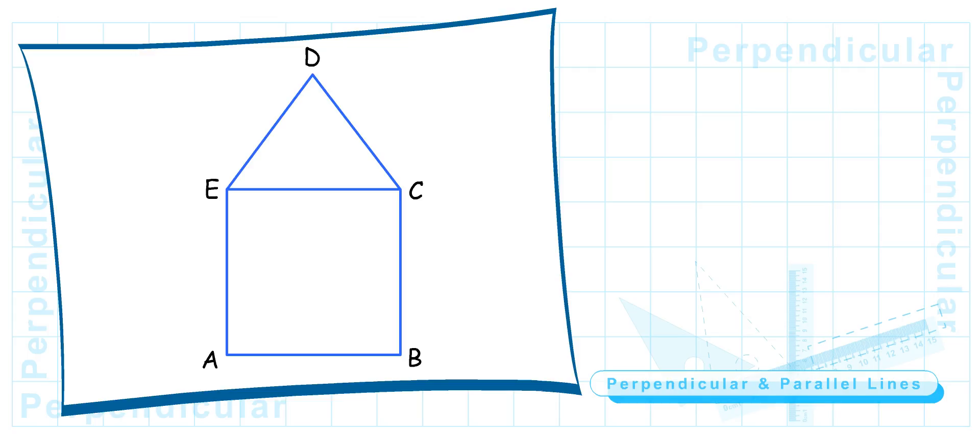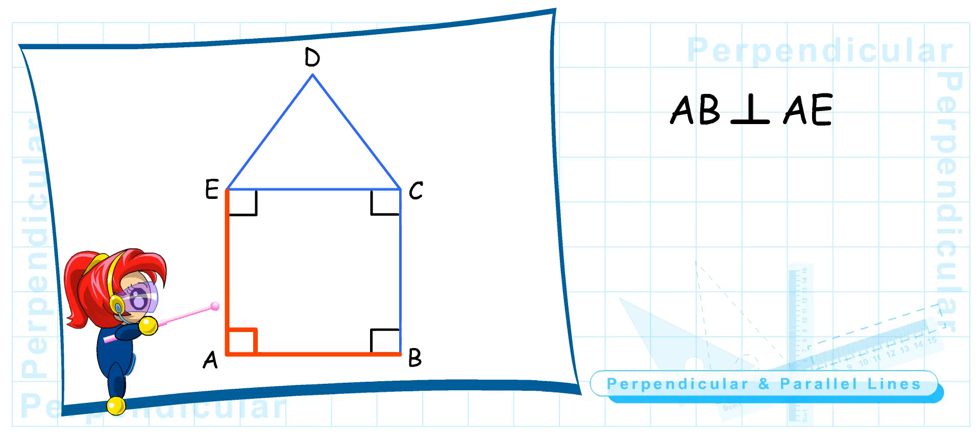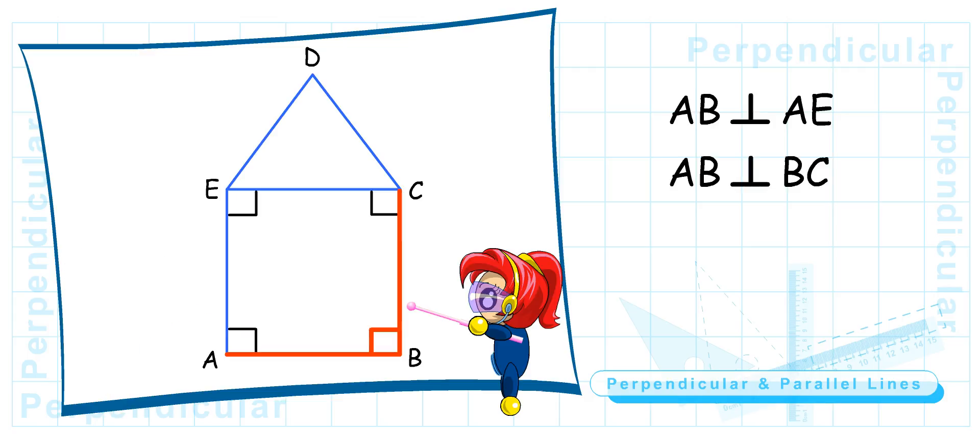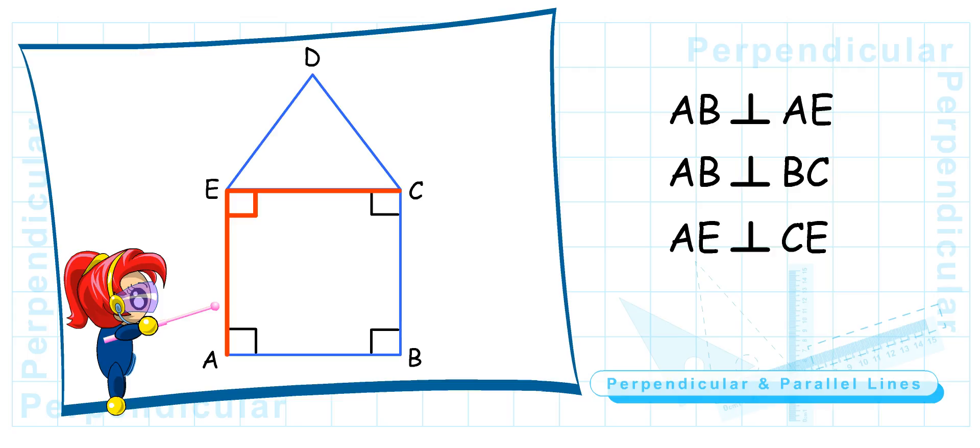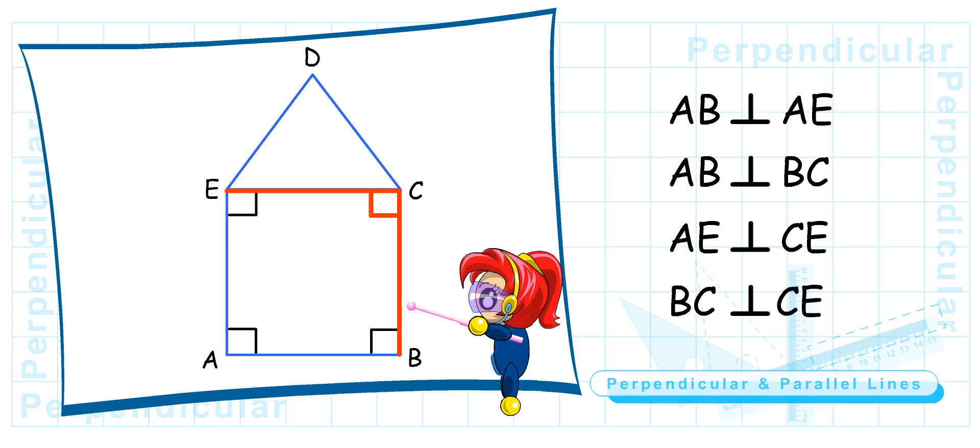Let me try. First, I am going to use my set square to find the right angles. That is a good start. Wow! There are four right angles in my picture. Well done. Now, can you list out the perpendicular lines? Okay. AB is perpendicular to AE. AB is perpendicular to BC. AE is perpendicular to CE. And BC is perpendicular to CE. Good job!